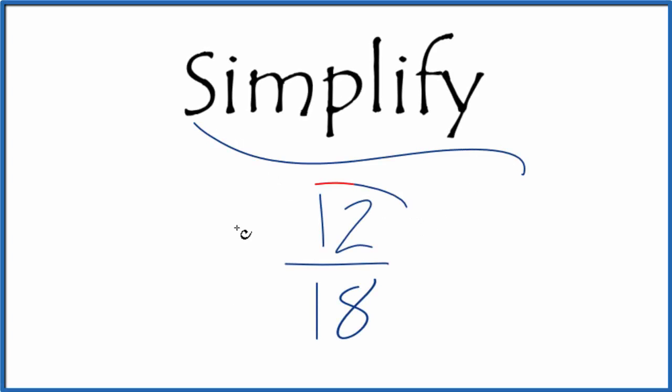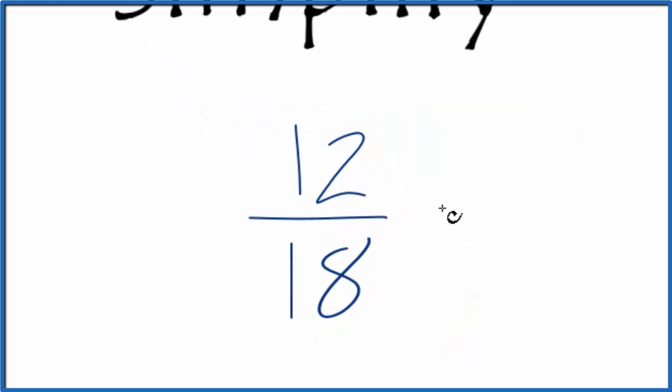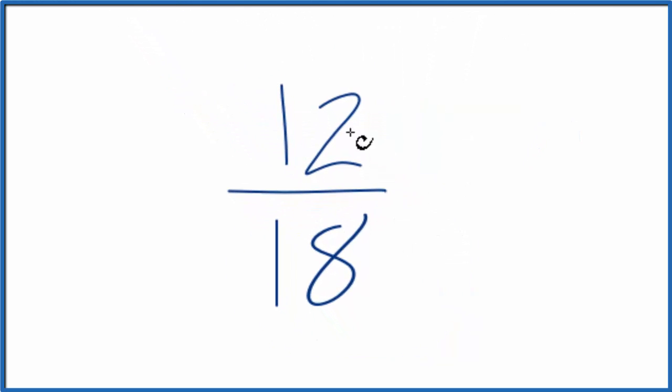Let's simplify the fraction 12/18. What we're trying to do here is find another fraction that's equivalent to 12/18, has the same value, it's just written in lowest terms.